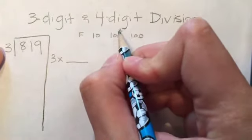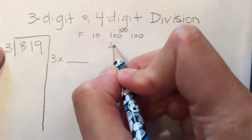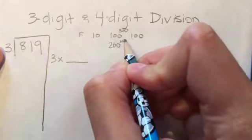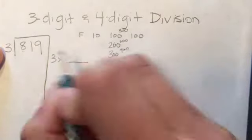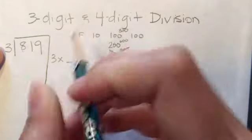So 3 times 100 is 300. 3 times 200 is 600. 3 times 300 is 900. Well, 900 is definitely too much, so that's not going to work.